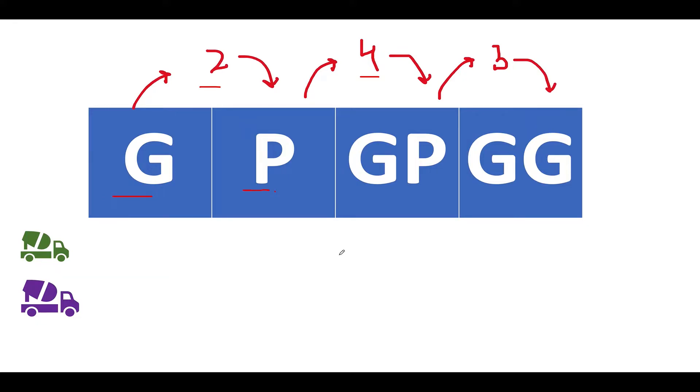So if I ask you guys how far these trucks would be traveling, they will be traveling to the last indexes of the respective garbage type. For example, the green truck would be going up till this particular location and the purple truck would be going up till this particular location. Let me just represent the indexes as well: zero, one, two, and three. The green truck needs to come up till this particular location and the purple truck needs to come up till this particular location because the last index for the plastic type is the second one.